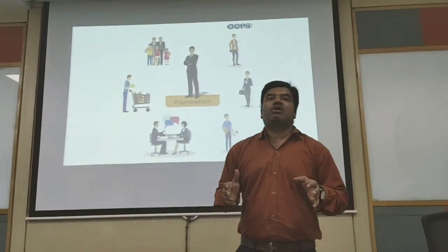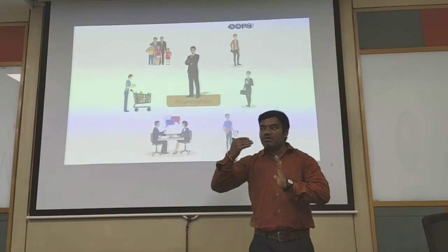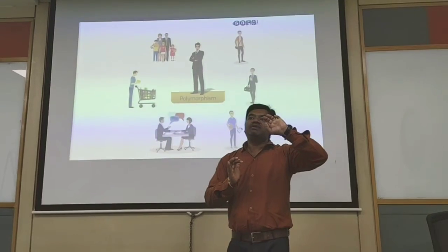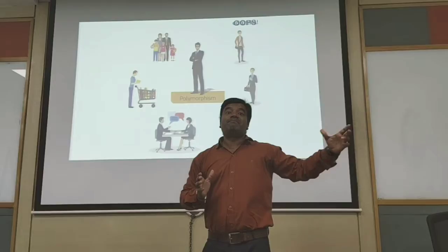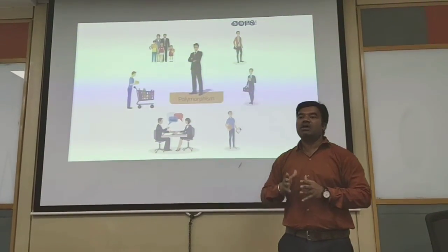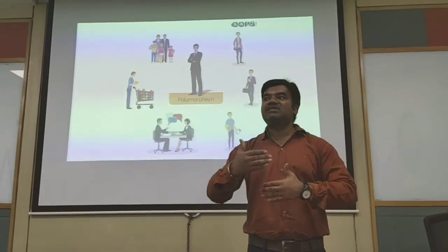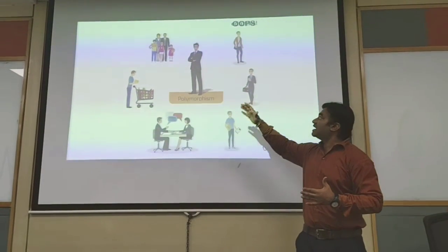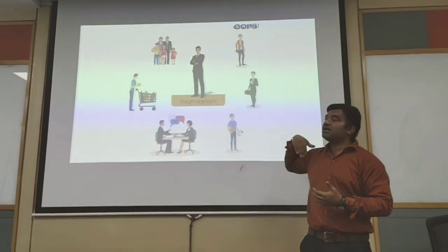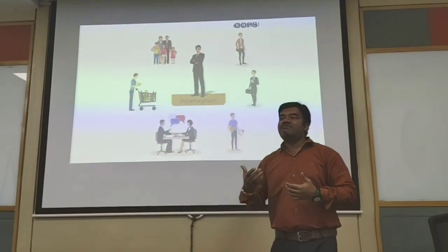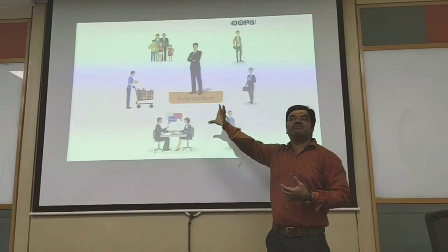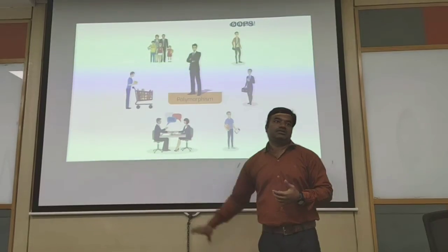Polymorphism is the concept of a same method giving a different output in different classes. For example, switching on the second switch in this lab turns on the lights, but the same second switch in another lab might switch on the fan. The same method acts differently in different classes — that is polymorphism. Another example: a person acts as a father in the family, as a manager in the office, and as a customer in a supermarket. The same person — or same method — acts differently in different places.